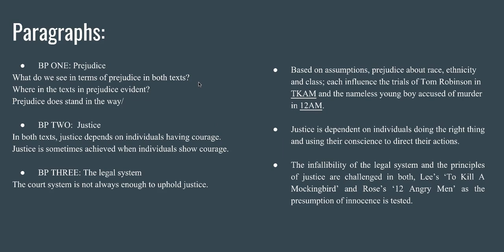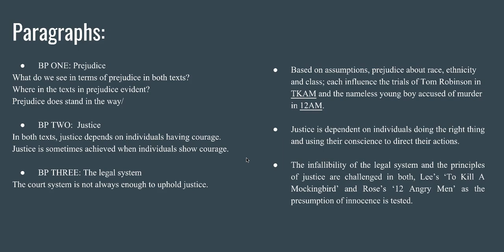For prejudice: what are our examples? Where in the text is prejudice evident? Prejudice does stand in the way — though you could disagree with that as long as you can support your point of view. Body paragraph two is justice: in both texts, justice depends on individuals having courage. Justice is sometimes achieved when individuals show courage, but sometimes justice isn't achieved despite courage. Then the legal system: the court system unfortunately is not always enough to uphold justice. Sometimes the court system on its own doesn't do enough. You've got your topic sentences here, so think about these ideas and write these dot points down.